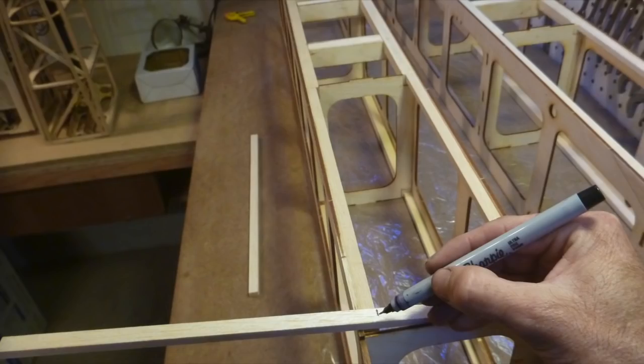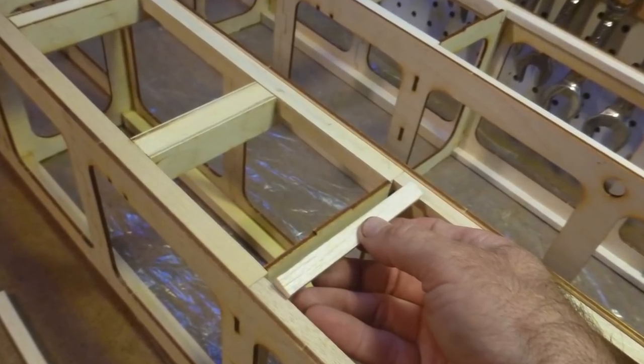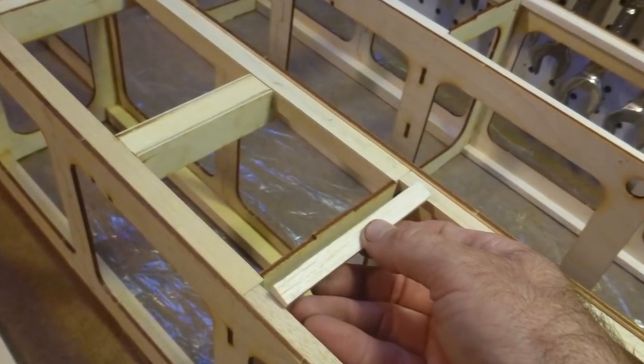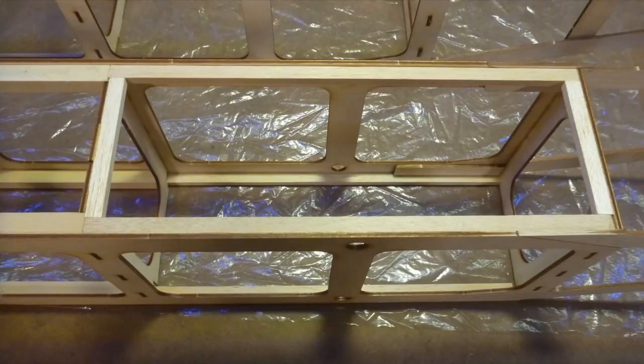Now, use some of the supplied three-eighths by quarter inch balsa stock and glue to the top of the bulkhead part number 6 and part number 7 on each end of the rear payload bay on the top of the fuselage.